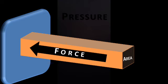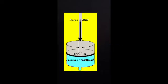Activity 9: In a cricket match, watch the batsman hitting the ball. Do you notice any change in the direction of motion of the ball? In the same way, hit a striker in carrom from one end. Do you notice any change in the direction of motion? Do you know the reason for this?